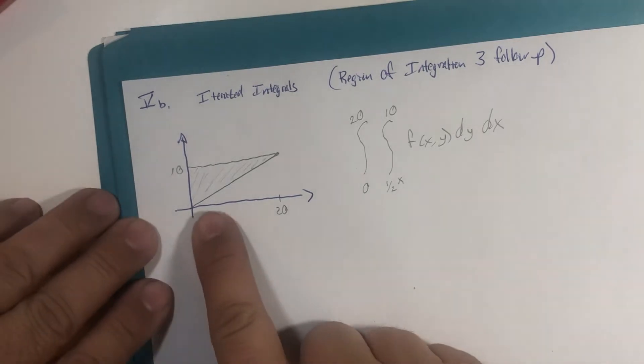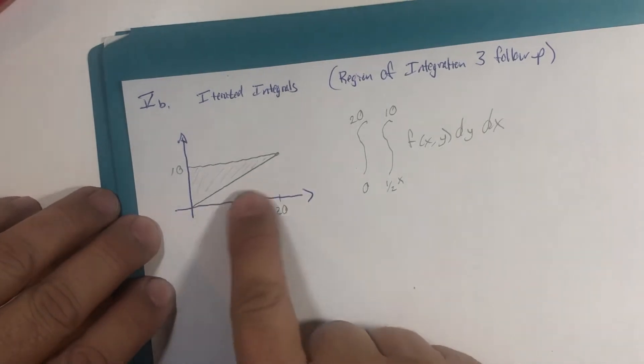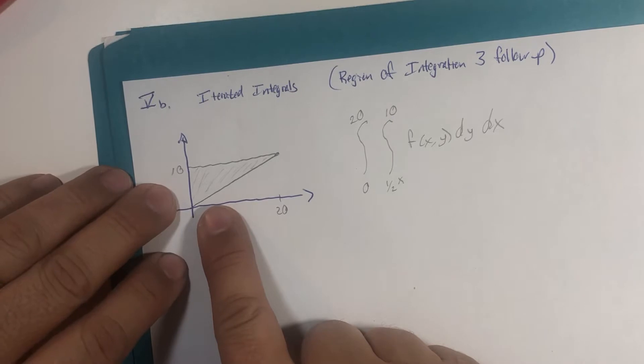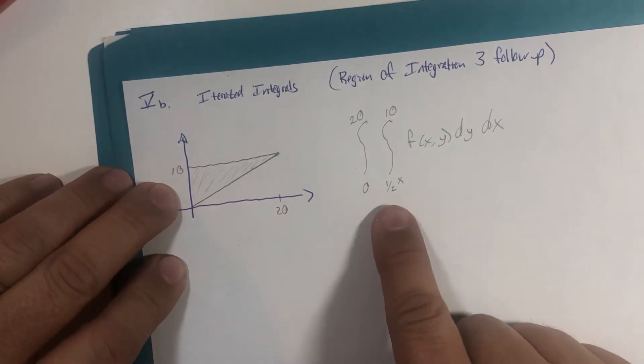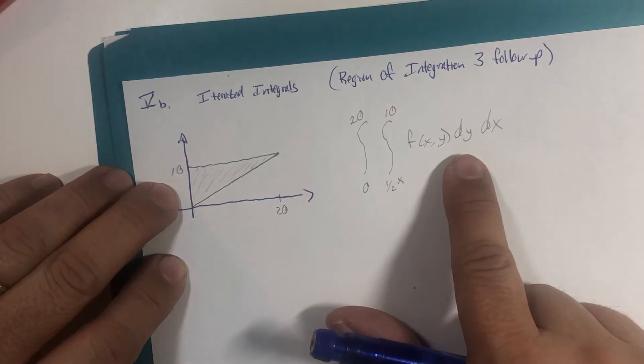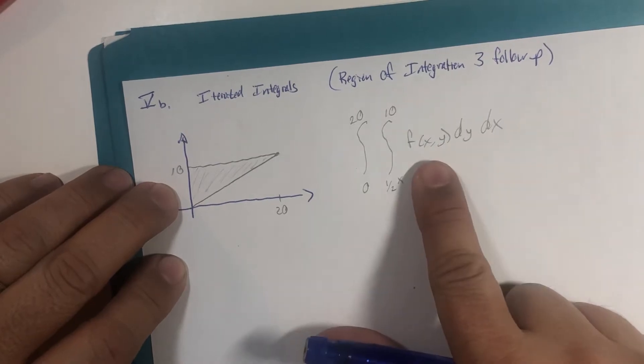So we had a region of integration, looks like this shaded region, this triangle, and developed the double integral dy dx, a function that's not been provided to us. So that means we don't have to integrate it either.